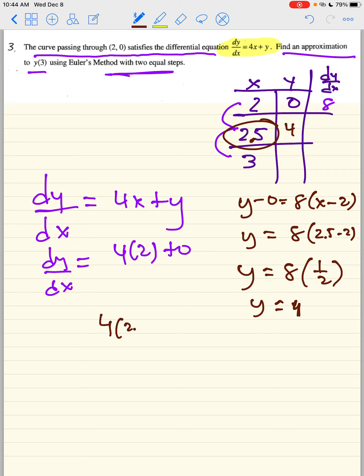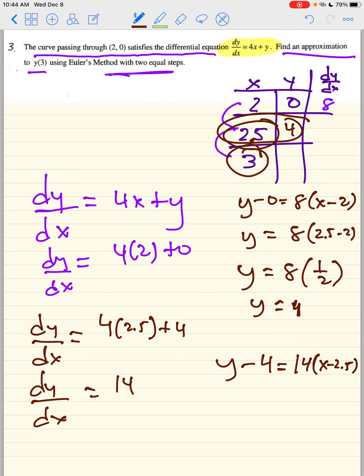Now you're going to have to repeat the process. 4 times 2.5 plus 4 is your derivative. So 4 times 2.5 is 10 plus 4 is 14. y minus your y point. Remember, now we're using a new y point. Equals m times x minus your x point. So now you're going to put the 3 in there. And you're going to get 14 times a half. So half of 14 is 7. Add 4. And your answer is 11. Therefore, f(3) is equal to 11. But they're asking you f of y. Or y(3).